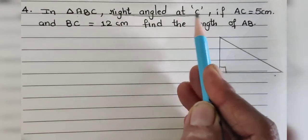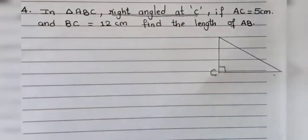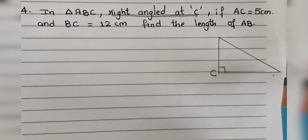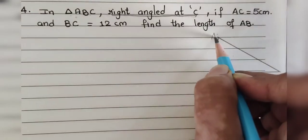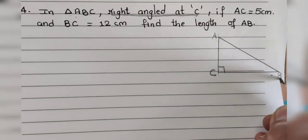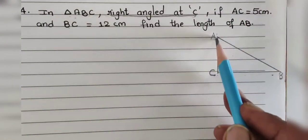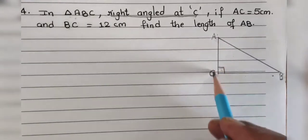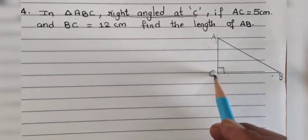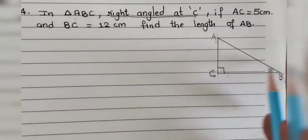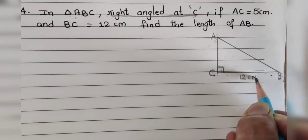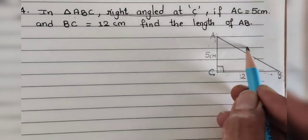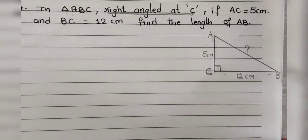Since it is right angled at C, 90° is at C. The remaining letters A and B can be placed at the other vertices. AC is the shorter side at 5 cm, and BC is the longer perpendicular side at 12 cm. We have to find the length of AB, which is the hypotenuse.